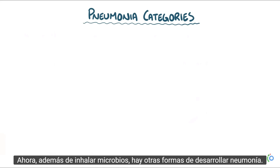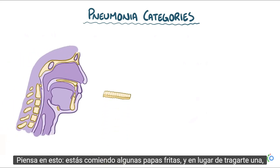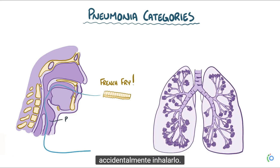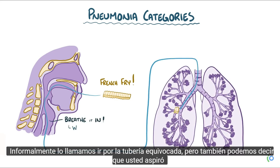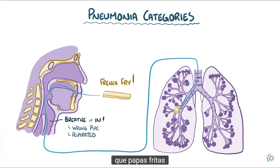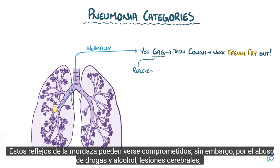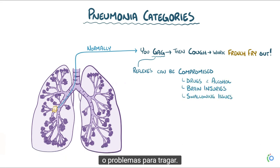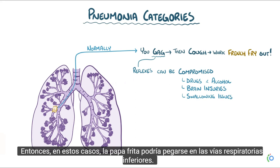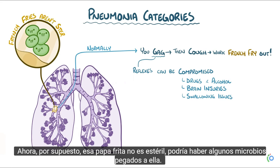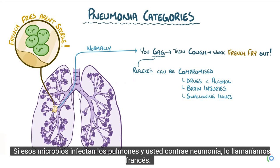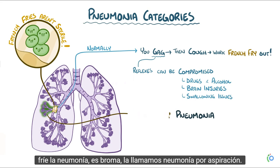In addition to inhaling microbes, there are other ways to develop pneumonia. For example, if you're eating french fries and accidentally breathe one in — informally going down the wrong pipe — you've aspirated it. Normally you'd gag and cough it out, but gag reflexes can be compromised by drug and alcohol abuse, brain injuries, or swallowing issues. In those cases the food might stay in your lower airways. Since it isn't sterile, microbes on it can infect the lungs — this is called aspiration pneumonia.